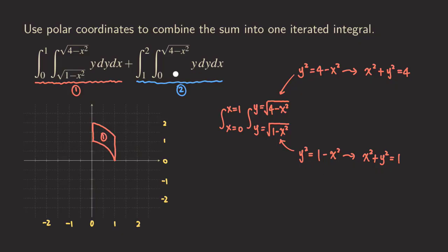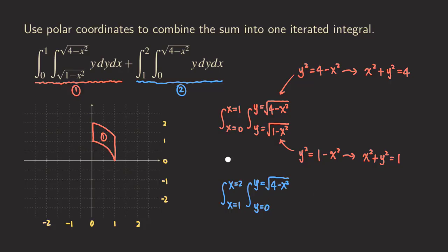Now we do the same thing for the second integral. I'm going to rewrite the limits as X equals one, X equals two, and then the integral from Y equals zero to Y equals the square root of four minus X squared. Y equals zero is really just the X-axis, and we are going to graph it from X equals one to X equals two, giving us this horizontal line for Y equals zero.